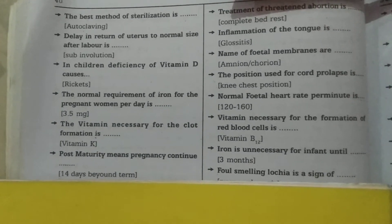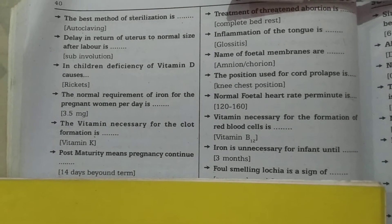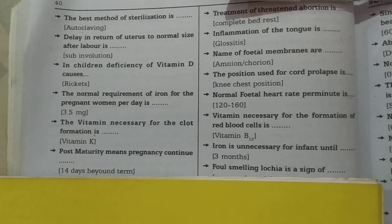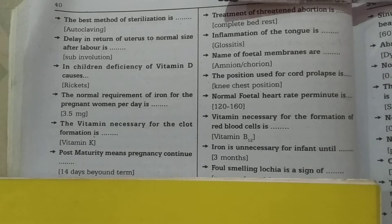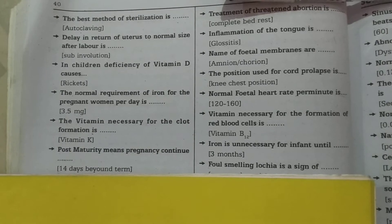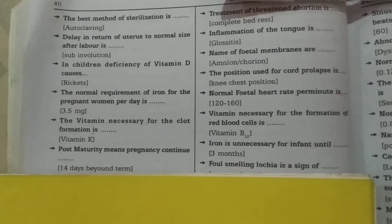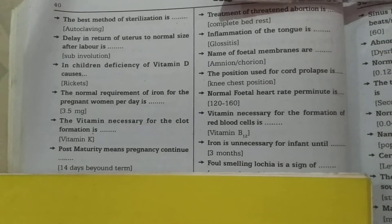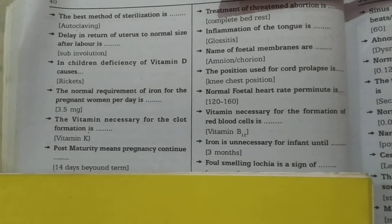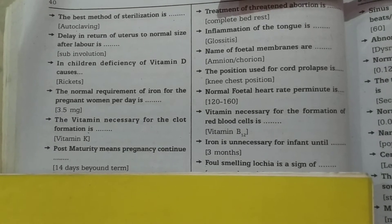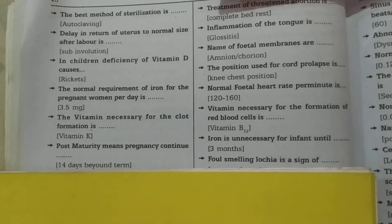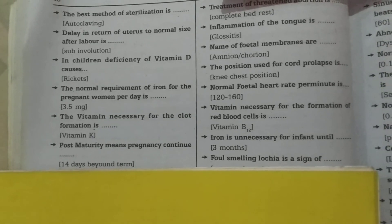In children, deficiency of vitamin D causes rickets. The normal requirement of iron for the pregnant woman per day is 38.5 milligrams. The vitamin necessary for clot formation is vitamin K.